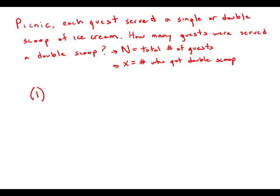Statement number one tells us at the picnic, 60% of the guests were served a double scoop of ice cream. So in other words, x equals 60%, written as a decimal, 0.6 times N.